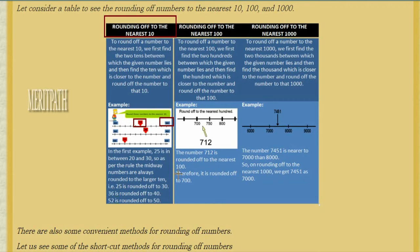When the number is given exactly in the middle between two 10s — for example, 25 is in between 20 and 30 — as per the rule, the midway number is always rounded to the larger number. So 25 is rounded off to 30.